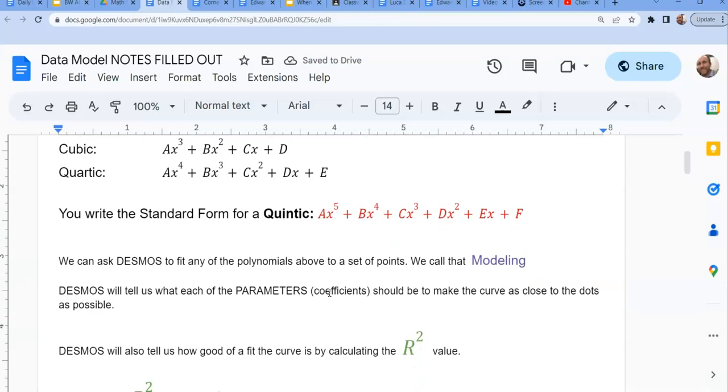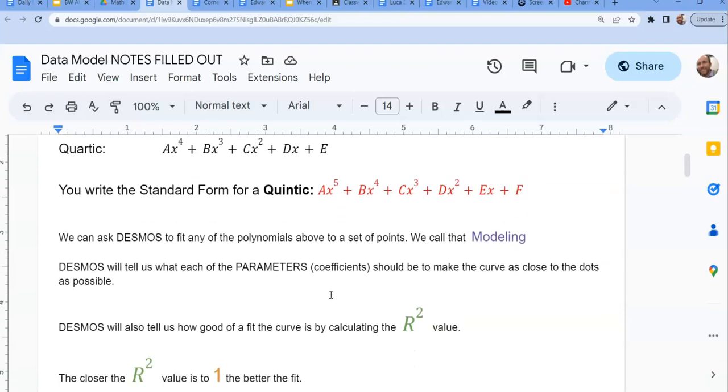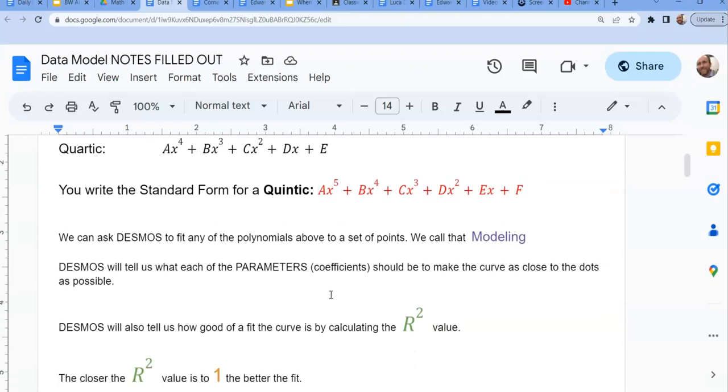So this next definition is basically what we just talked about. We can ask Desmos to fit any one of those polynomials we want. We can say, hey, is this a good fit? Is this a good fit? Is this a good fit? Any one of those to whatever set of data we have. That process is called modeling. Right there. It's in purple. Great.